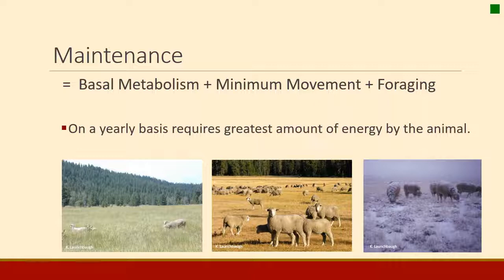Although maintenance is just a minimum, it is the most amount of energy that animals need on a yearly basis. First they have to meet this minimum maintenance requirement, and then they can do other things like grow and reproduce.